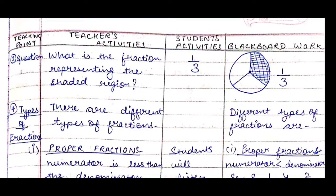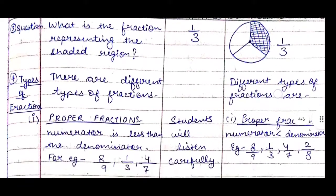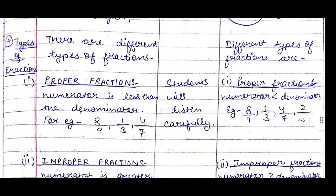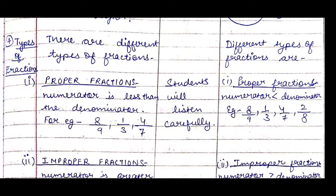After this, the next teaching point is a comprehension question. We will ask: what is the fraction representing the shaded region? We will draw a circle on the board, divide it into three parts, shade one region, and ask students what fraction represents the shaded region. The answer is 1/3. We will show them how to arrive at this.